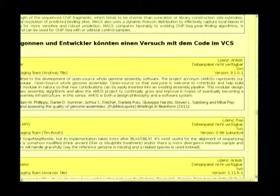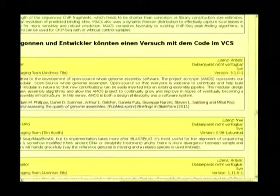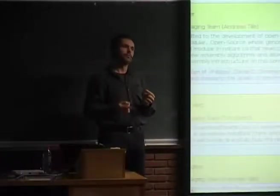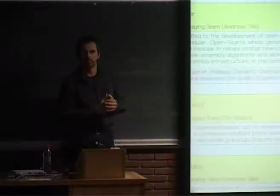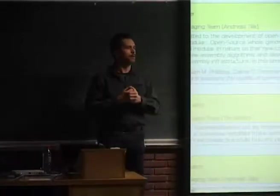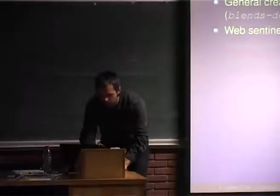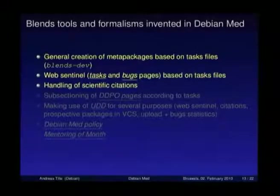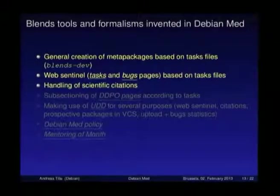These are the task pages. We also have bugs pages — which I can show later — where you can find all bugs currently open for packages in this field. The idea is that people interested in a specific field will be more motivated to fix those bugs than going to the general Debian bug tracking system. We also handle scientific citations, creating a BibTeX file for all software inside Debian — about 150 or so citations connected to Debian packages. You can download the BibTeX file and use those citations.